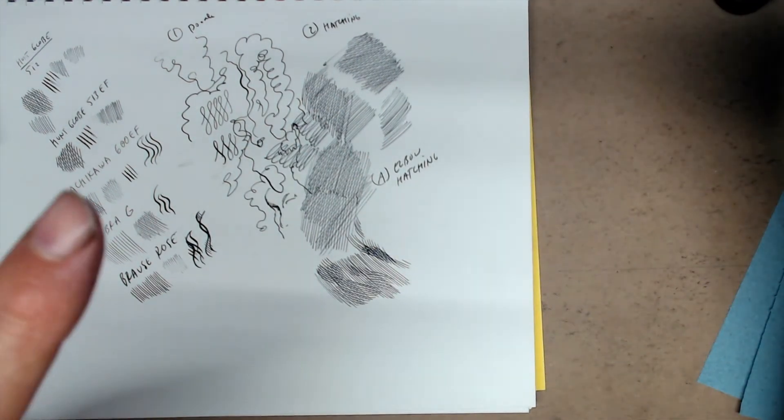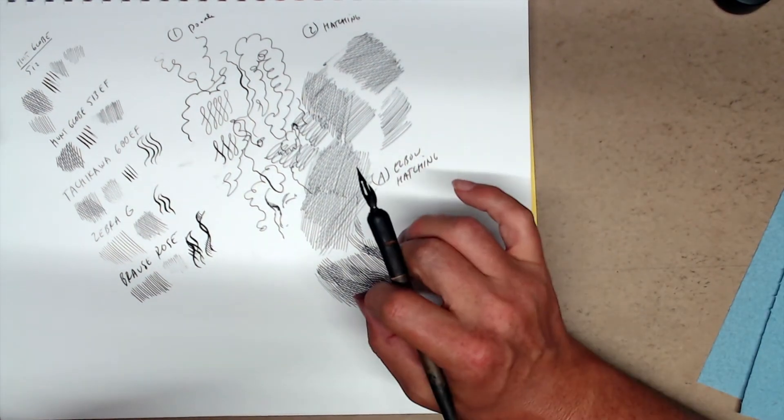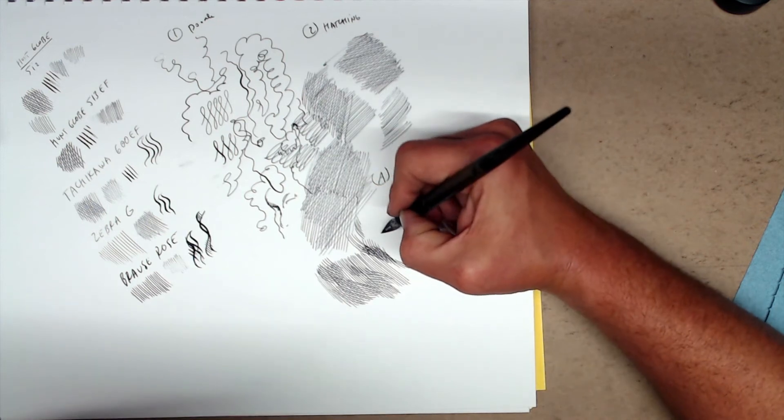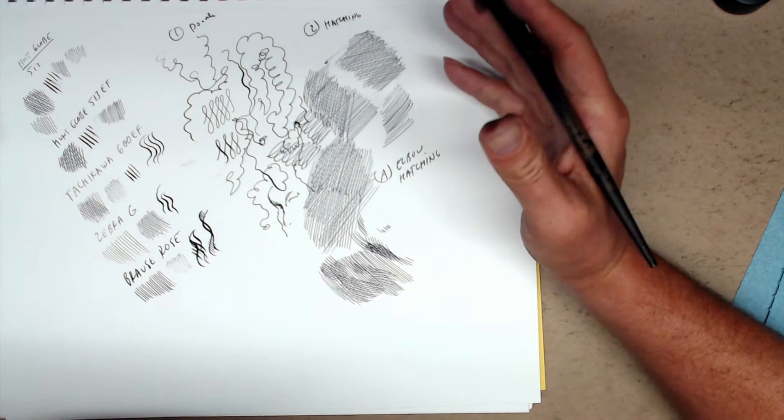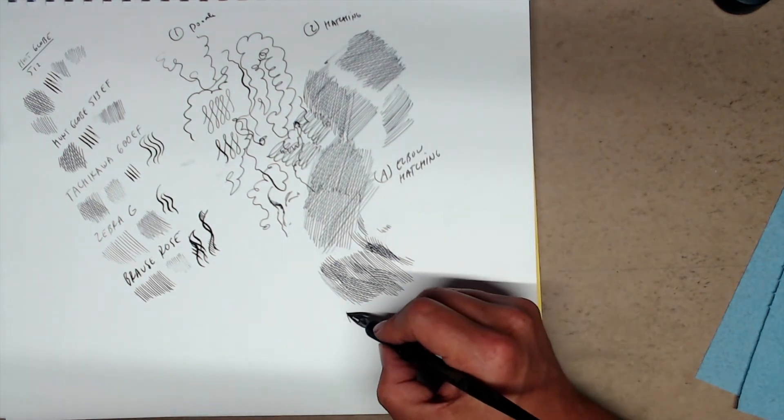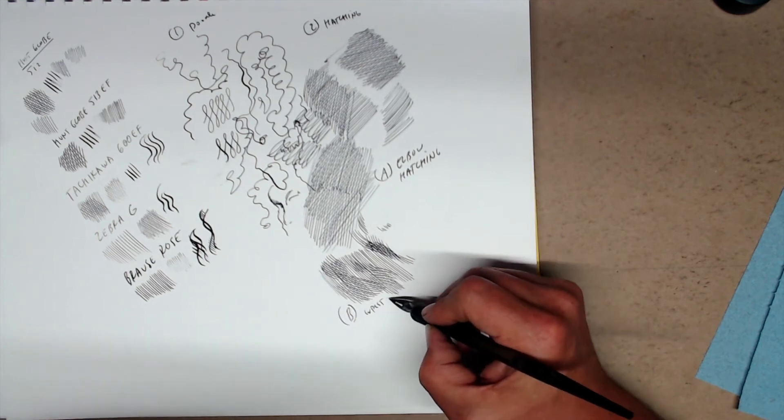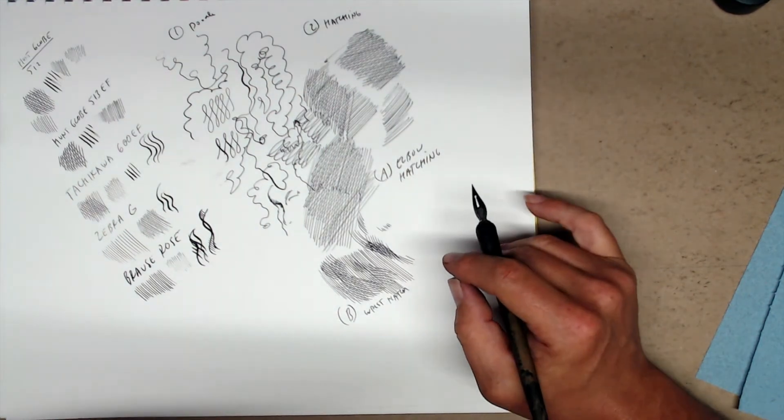Okay, so that is wrist hatching. The advantage is that you have much more fine motor control. Look, you use your fingers too. So for a little tiny hatching, I guess this is finger hatching. But these are two broad categories. This is your wrist hatching.